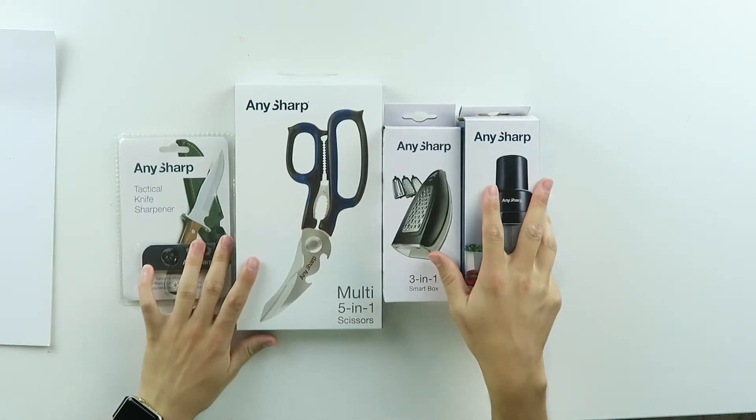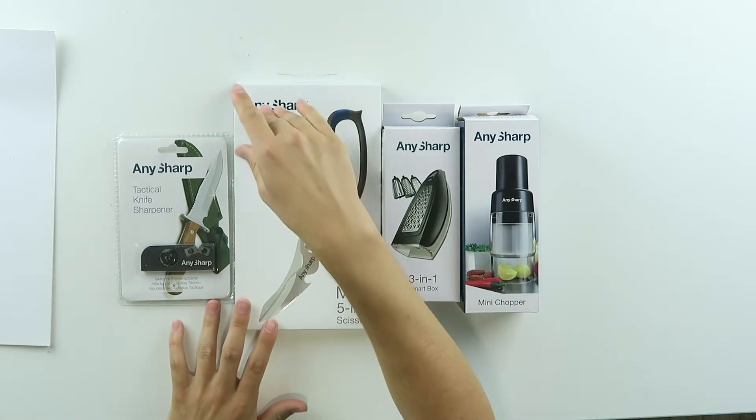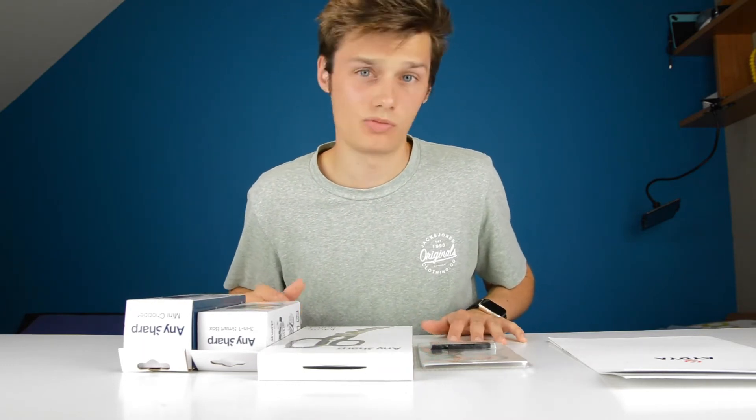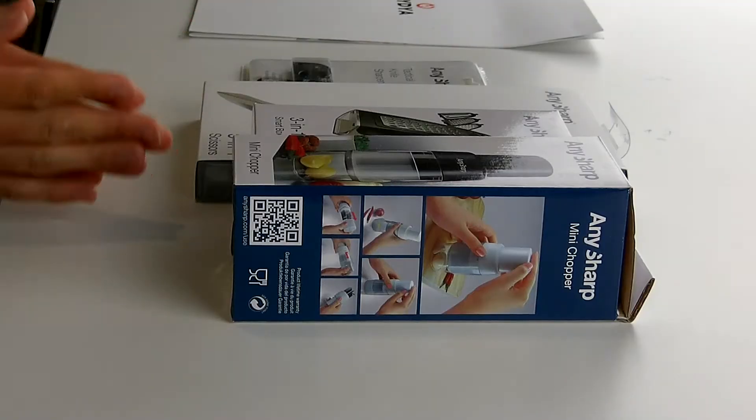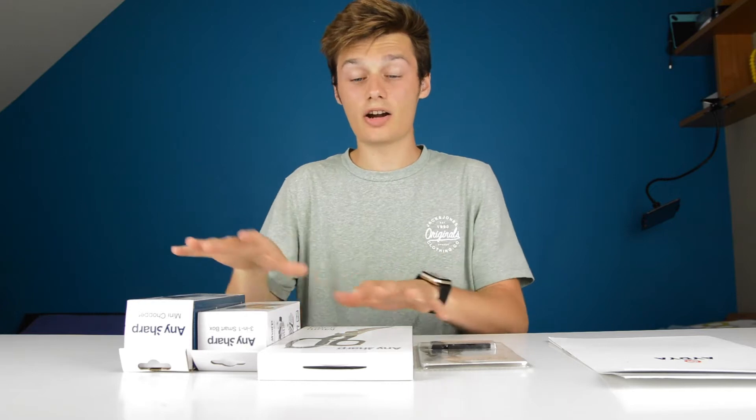As you can see in front of me I have four boxes from the same brand. The brand is called Any Sharp and they make kitchen utensils. I've already did a review on the Any Sharp knife sharpener you can find it up here, but these are some other products.